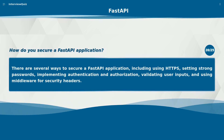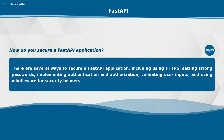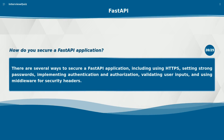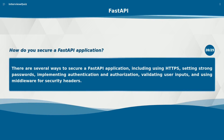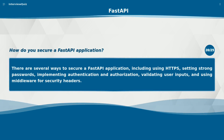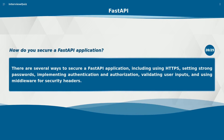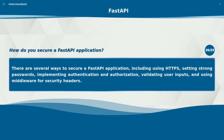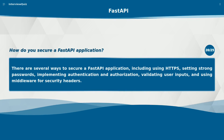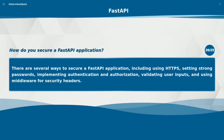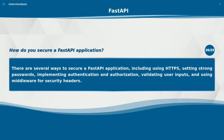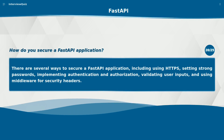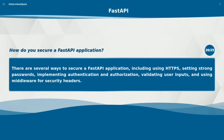How do you secure a FastAPI application? There are several ways to secure a FastAPI application, including using HTTPS, setting strong passwords, implementing authentication and authorization, validating user inputs, and using middleware for security headers.